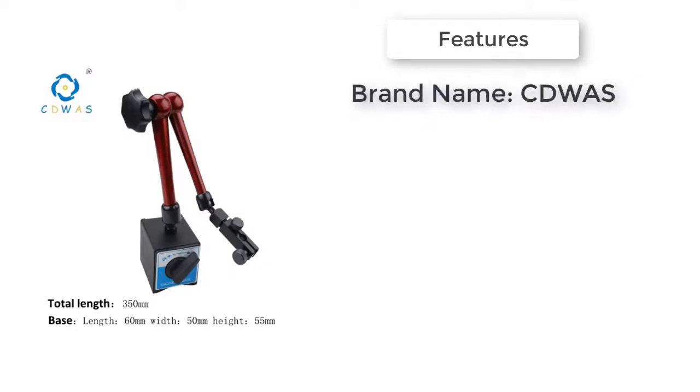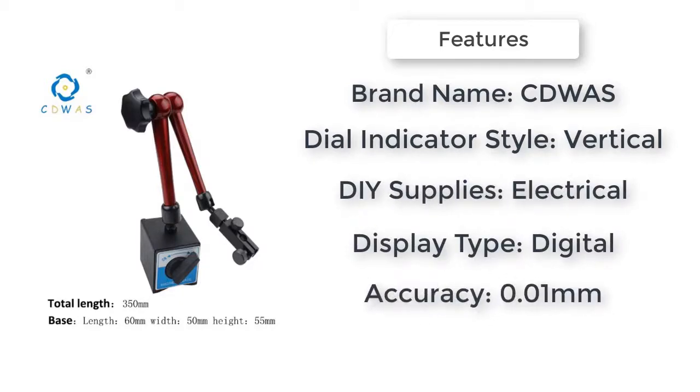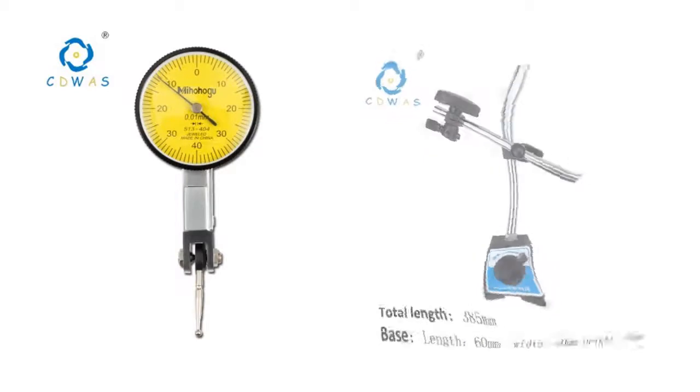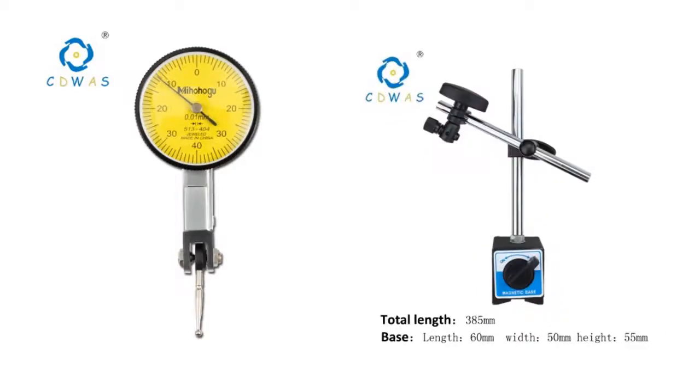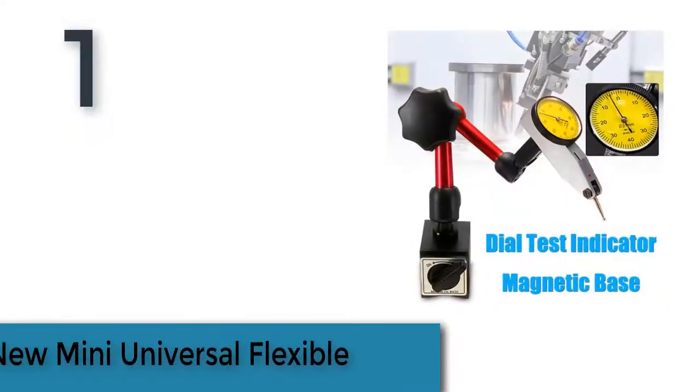Brand name CDWAS, DIY supplies electrical, max measuring range zero to ten millimeters, dial indicator style vertical, display type digital, accuracy 0.01 millimeters, model number magnetic base holder.